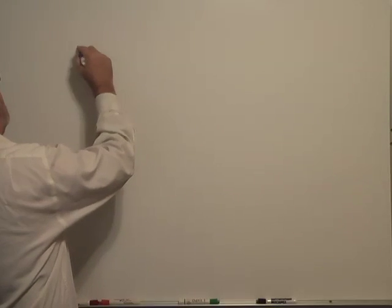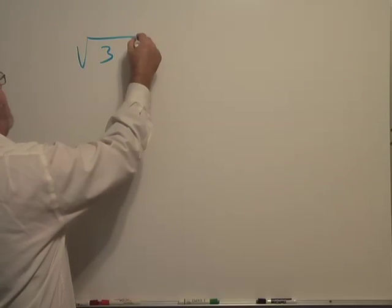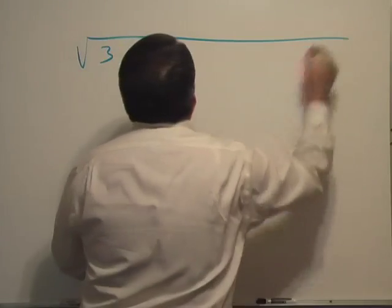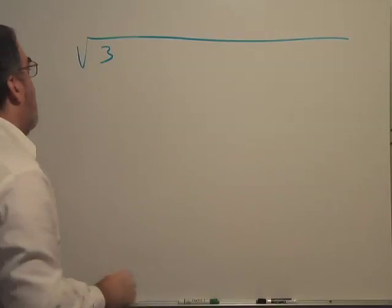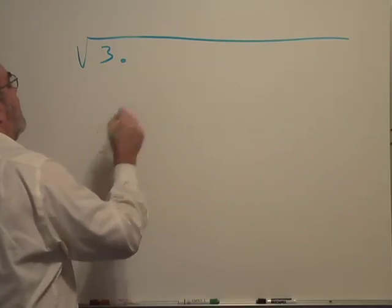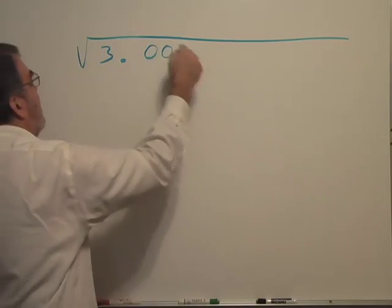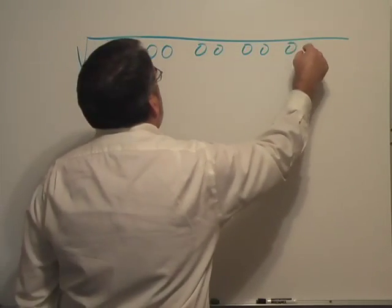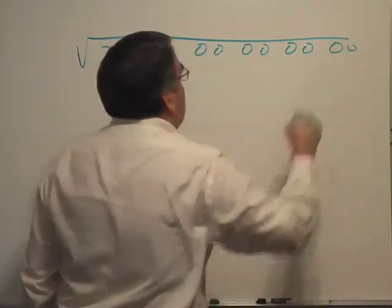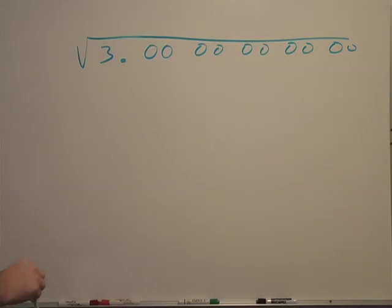Let's take the square root of 3 for example. I'm going to extend this line out like this and here's our decimal place, and I'm going to put pairs of zeros up here. I don't know if I'll get quite that far, but we'll see.